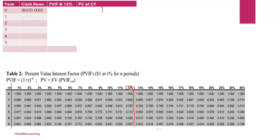Remember, the definition says we include the initial capital investment. In this case, our initial investment is R650,000, and it sits in year zero — the current or present year. You do not discount year zero because it is already in the present; its present value is the same amount.